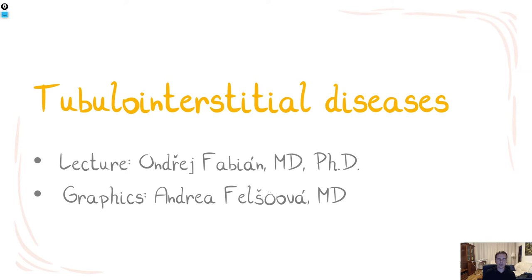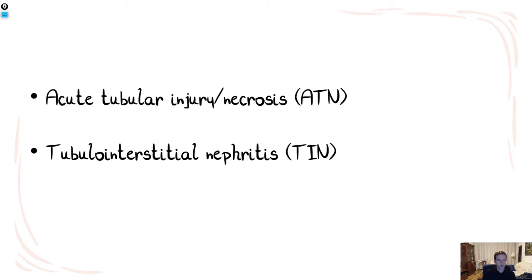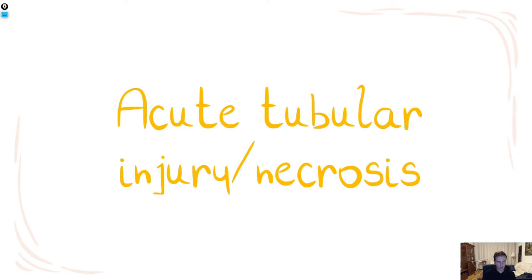Today we will talk about tubular interstitial diseases. The word 'disease' is quite fitting here because not all conditions included in this group are inflammatory. There are also some primary non-inflammatory conditions, so it is better to cover them with the term tubular interstitial diseases. In this lecture we will talk about ATN — acute tubular injury/necrosis — and then move toward the inflammatory conditions, which means tubular interstitial nephritis. Let's start with ATN.